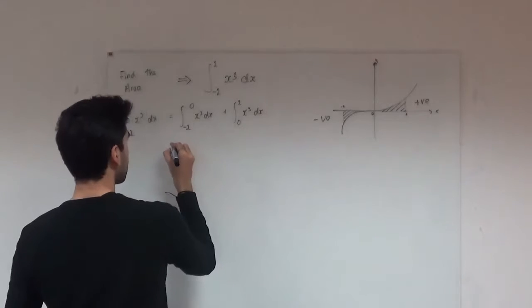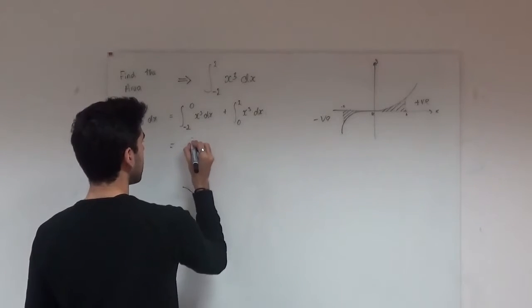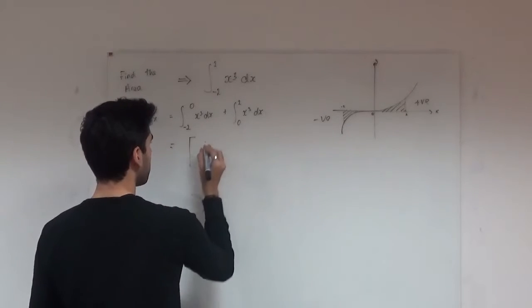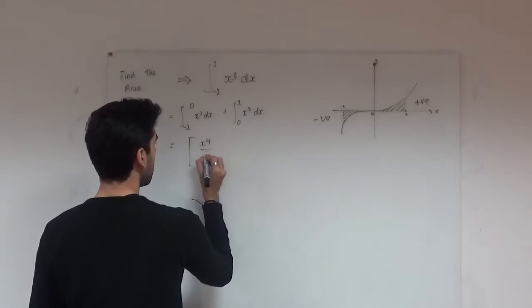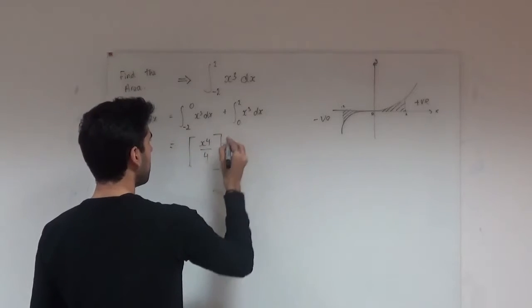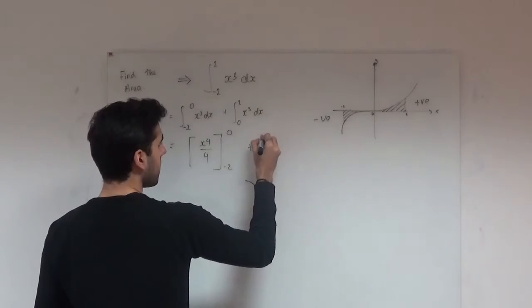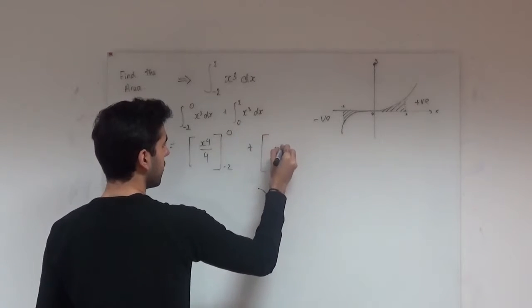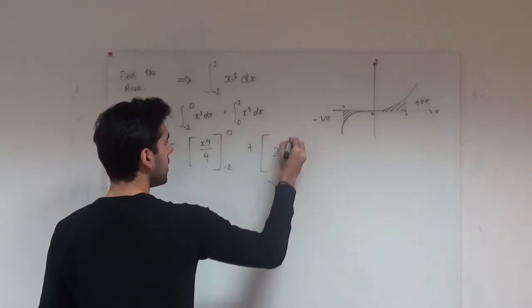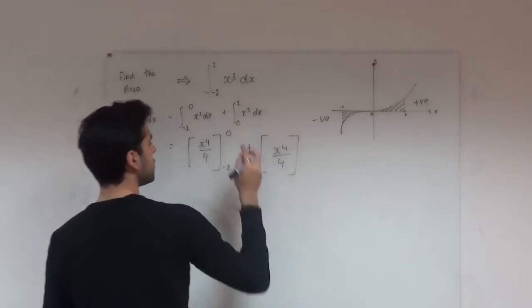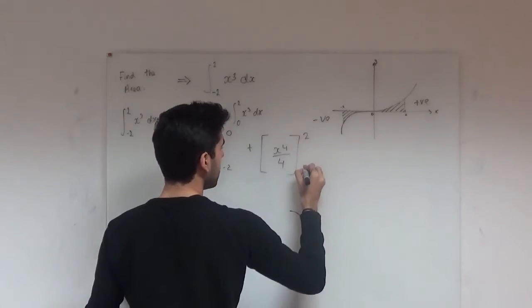So if we calculate what this is, integrating x cubed using your basic laws would be x to the power of 4 all over 4 in the limits of minus 2 to 0, and we add on the same integral, x to the power of 4 all over 4, but this time it's going from 0 to 2. So we have 2 here and then 0.